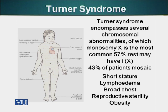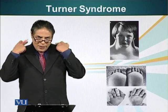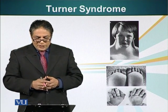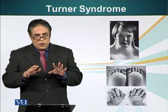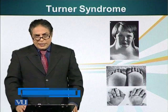Features of Turner syndrome include short stature, as genes for vertical growth are present on the X or Y chromosome. Lymphedema — meaning swelling of hands and feet. Broad-chested, reproductive sterility — these people with Turner syndrome cannot reproduce — and obesity. An important feature is webbing of the neck. Looking at the photographs: the top photograph shows the webbing of the neck, a typical feature of Turner syndrome. The lower two photographs show lymphedema — swelling of hands and feet.